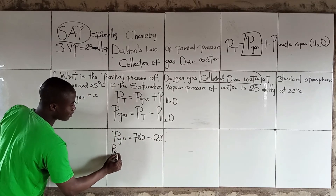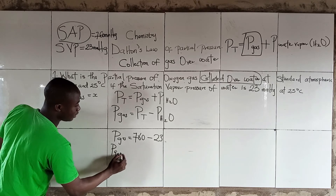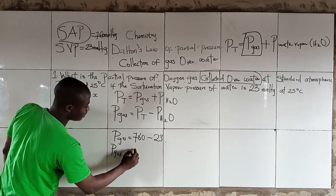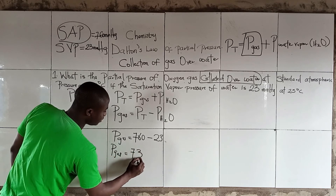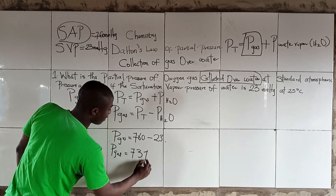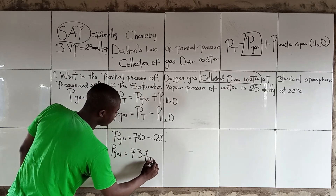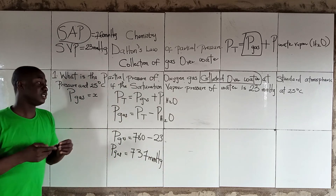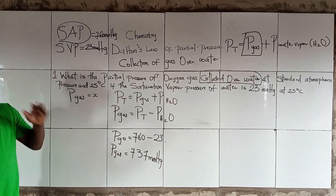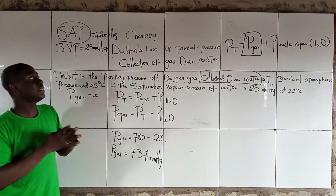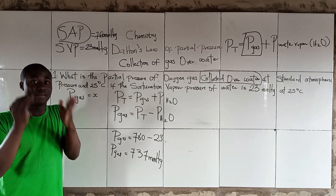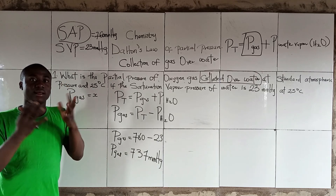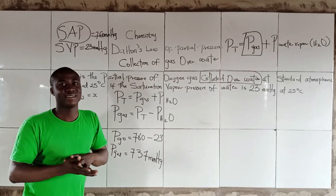So P_gas equals 737 mmHg. This is how to solve questions pertaining to the collection of gases over water. Thanks for watching.